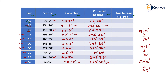Now the difference between every forebearing and backbearing is exactly 180 degrees for all lines. We have corrected all the magnetic bearings, and the corrected magnetic bearing for all lines is shown in the corrected bearing column.